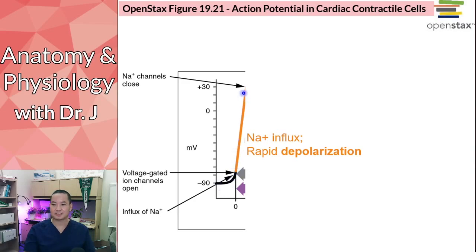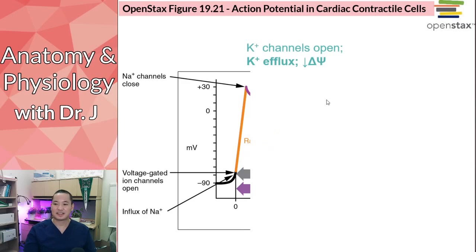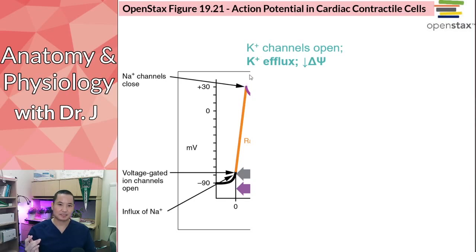The positive sodium ions are going to make the membrane potential and overall charge inside the cell jump toward the positive. Now what happens next? At this point, potassium channels open.